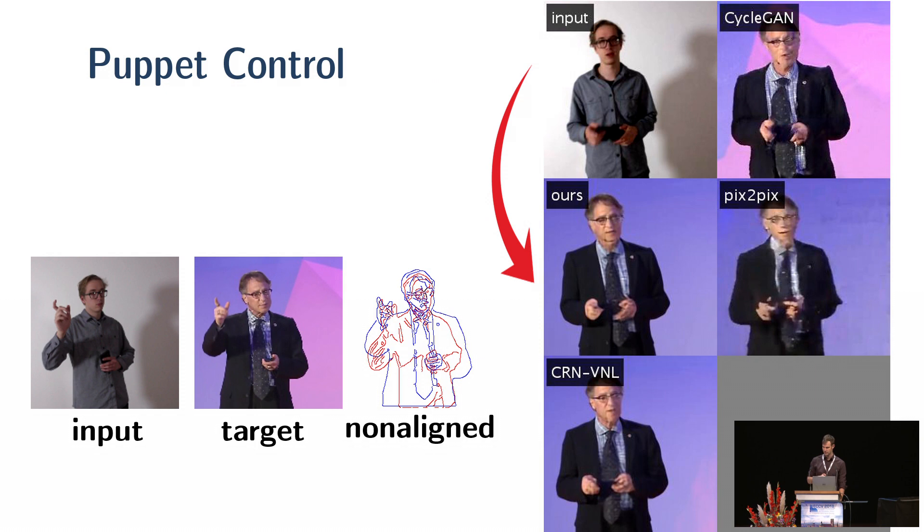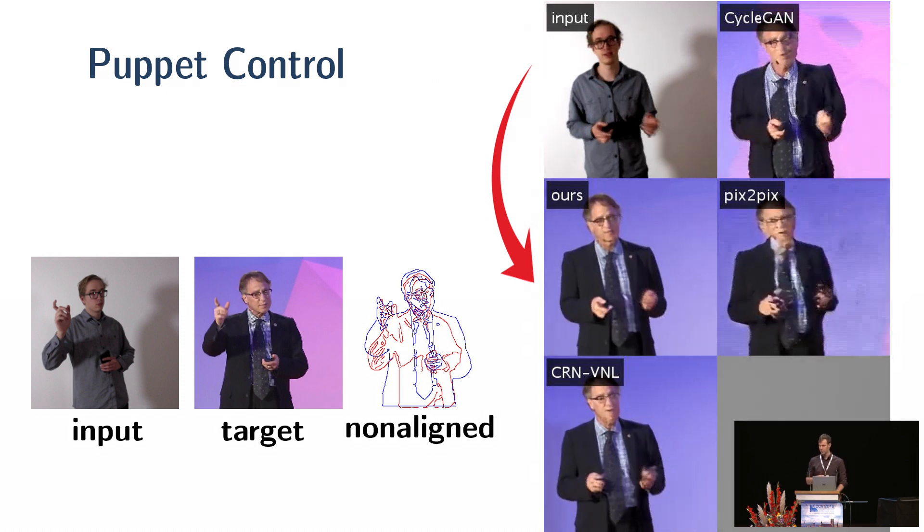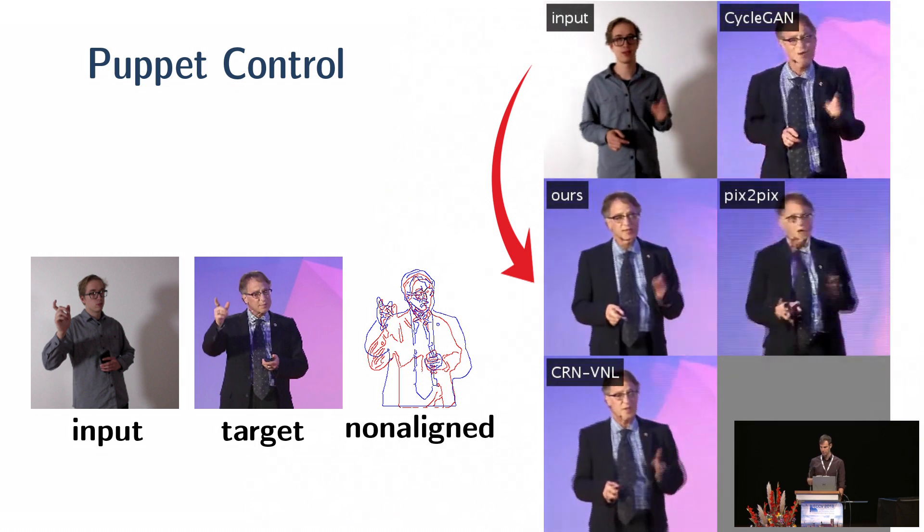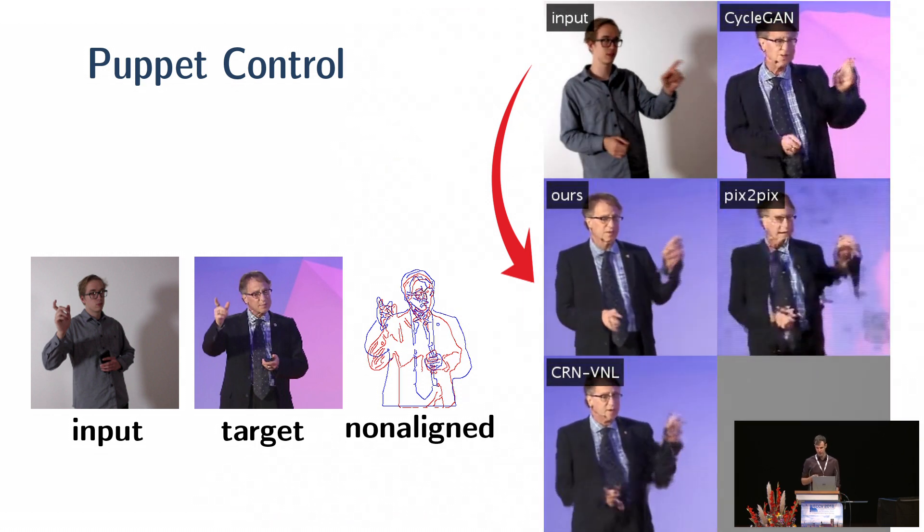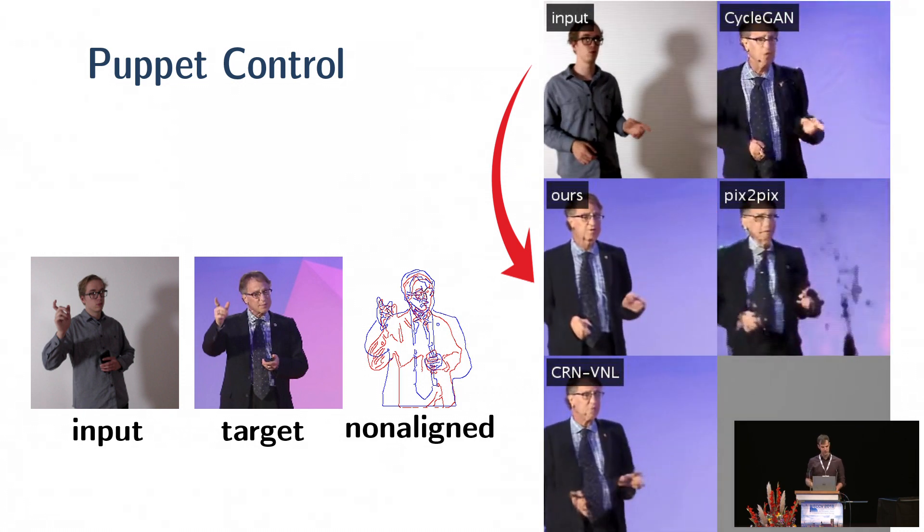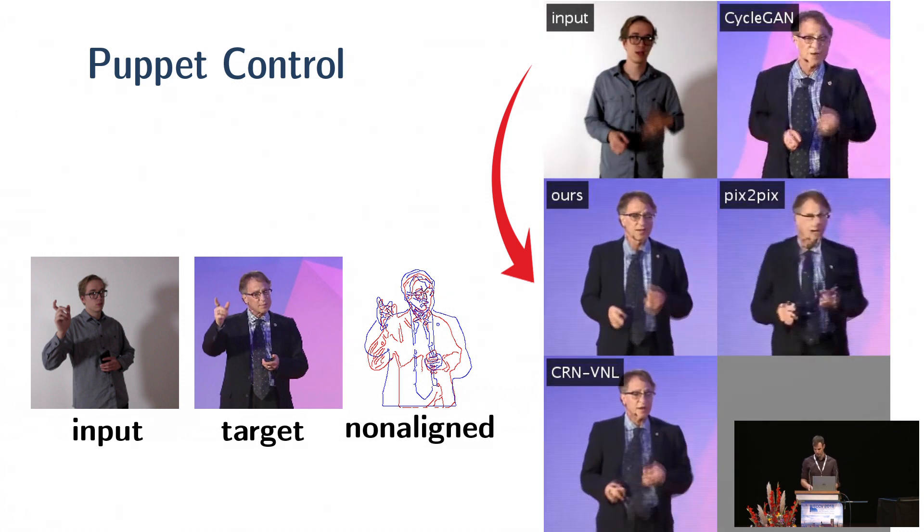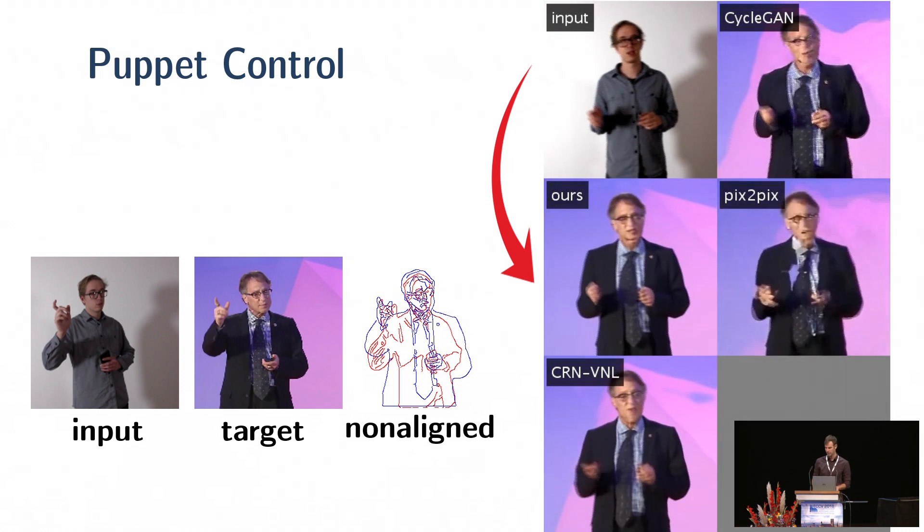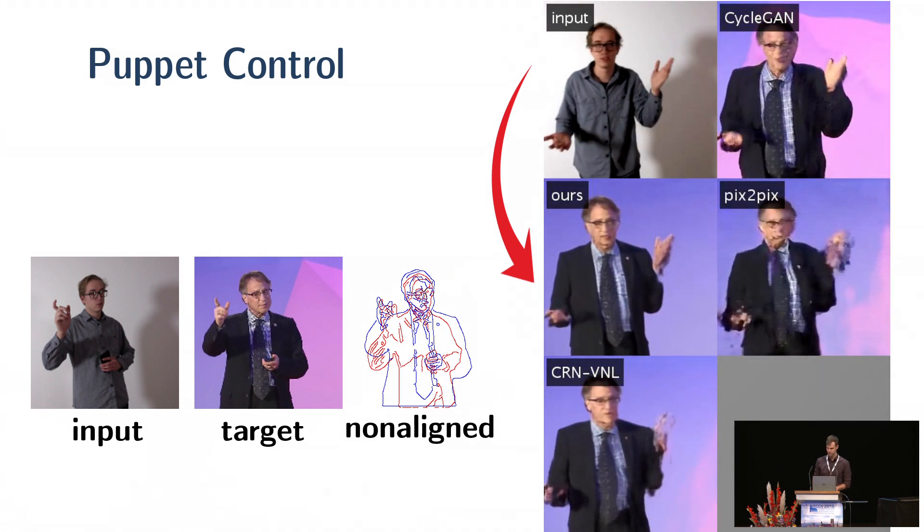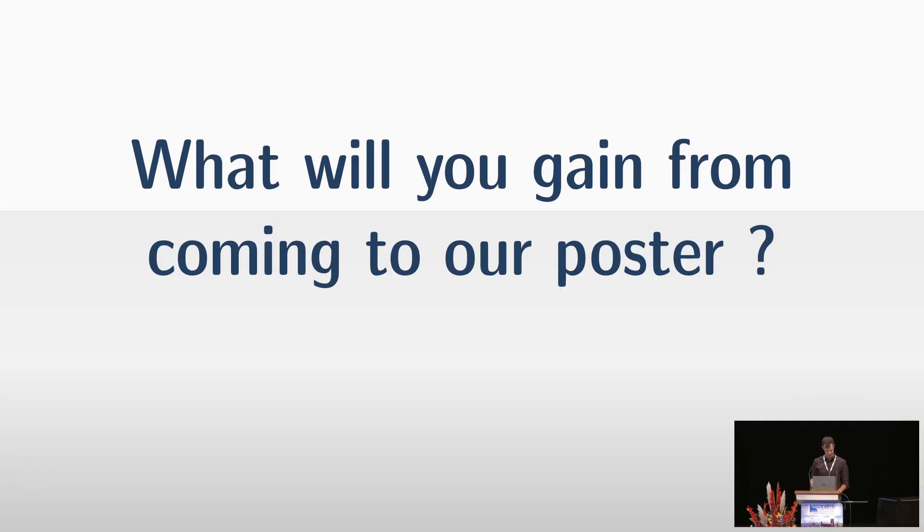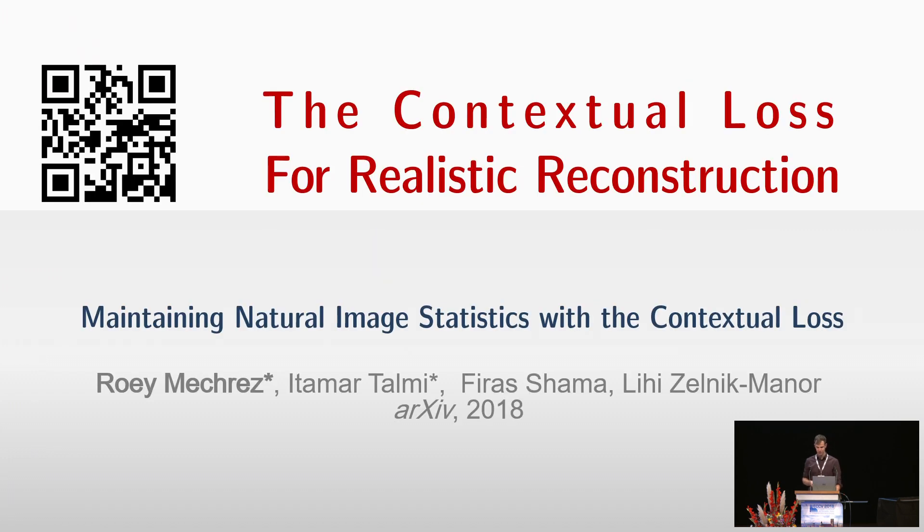And here are some results. At the top, you can see the input image of person A, below it our results and three other baselines. CycleGAN, Pix-to-Pix and our architecture, the architecture that we use, CRN, with a traditional loss function.